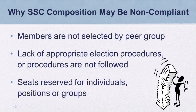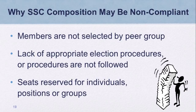Among the common FPM findings related to noncompliant SSC compositions: Members are not selected by their peer group, often due to a lack of appropriate election procedures or procedures not being followed. Each peer group is required to select their own members — teachers elect teachers, parents select parents and community members, students select students. Another unallowable practice is reserving SSC seats for specific personnel such as grade-level representatives, teachers' union representatives, PTA presidents, community liaisons, or English learner parents. Each peer group is required to elect their own members; SSCs can seek input from advisory groups but cannot reserve seats for anyone except the principal.